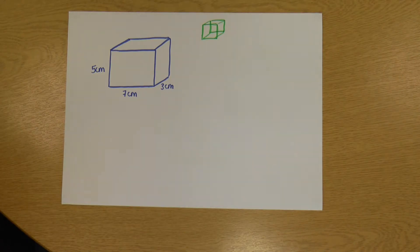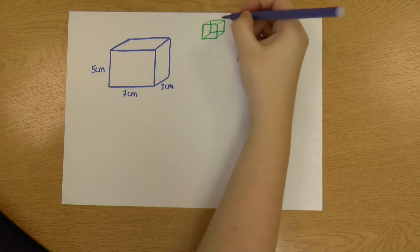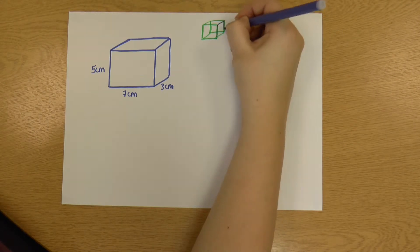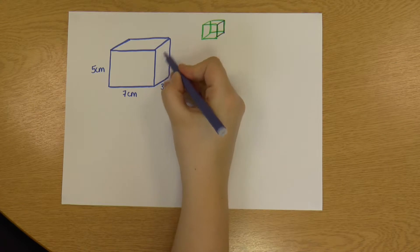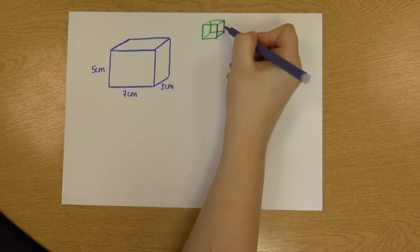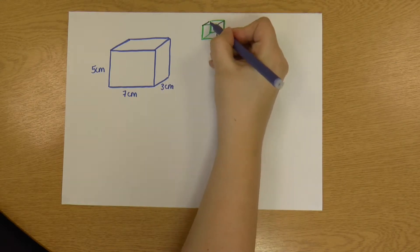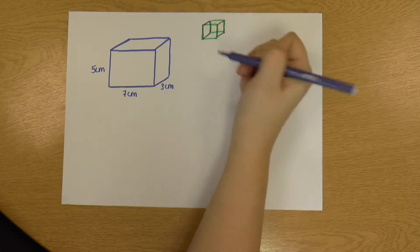Then, if I just grab a different colored pen actually, we have this one at the side, which is equivalent to this on my diagram, and the one opposite that, which is that side.